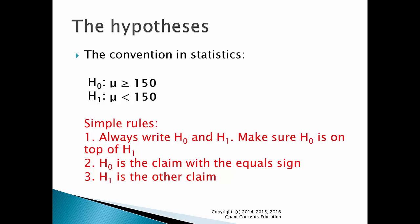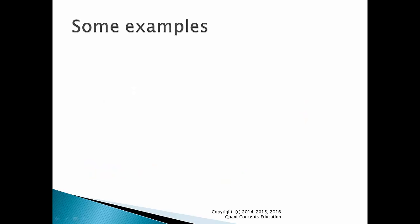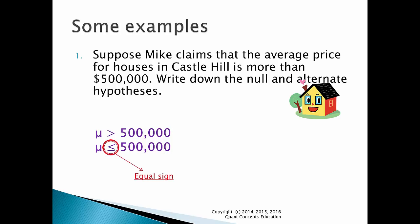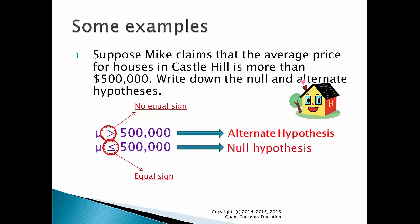Surprisingly straightforward, huh? Let's go through some examples for practice. Suppose Mike claims that the average price for houses in Castle Hill is more than $500,000. Write down the null and alternate hypotheses. Mike states that the average house price, mu, is more than $500,000. Note that his claim is that it's more than — not more than or equal to. The counterclaim, the complete opposite, is that mu is less than or equal to $500,000. Here is the equal sign, so this claim must be the null hypothesis. The first claim has no equal sign, so this must be the alternate hypothesis. We write down H0 and H1, and the null and alternate hypotheses in that order.